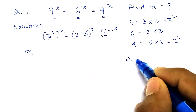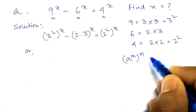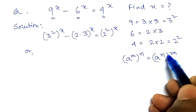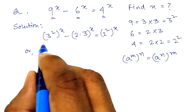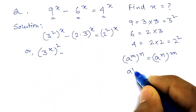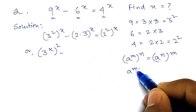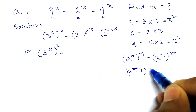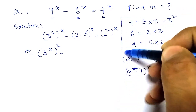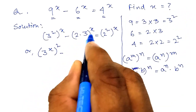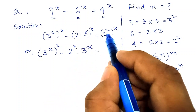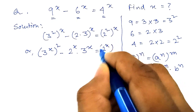We know that a to the power m to the power n equals a to the power mn — that is, the indices are interchangeable. So we can write 3 to the power 2x. Also, (a into b) to the power n equals a^n into b^n, so (2 into 3)^x becomes 2^x into 3^x. Similarly, (2²)^x becomes 2 to the power 2x.